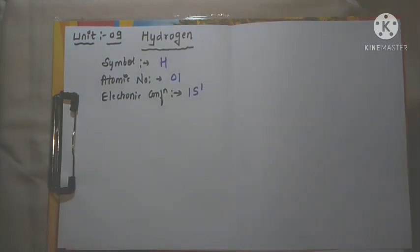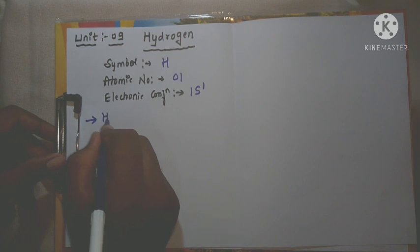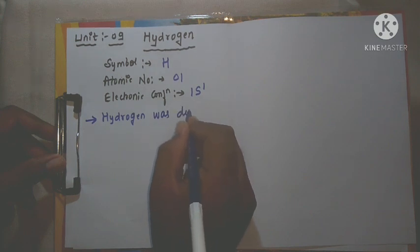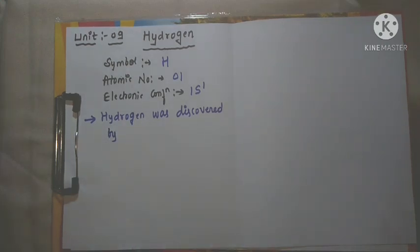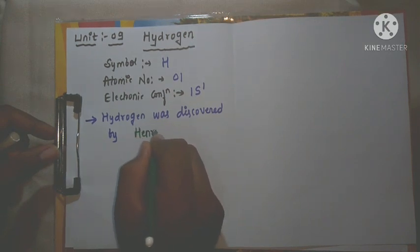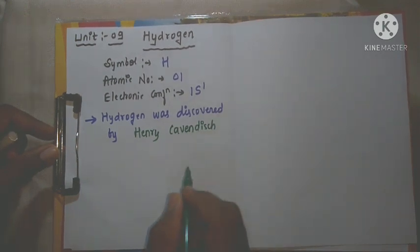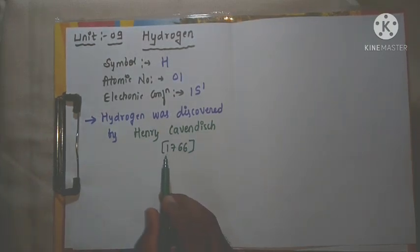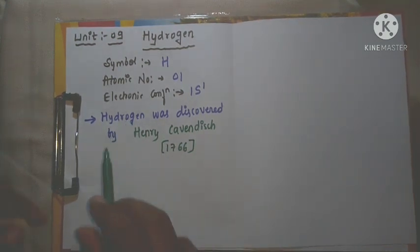Now the question is: who discovered hydrogen? Hydrogen was discovered by the scientist Henry Cavendish. He discovered hydrogen in the year 1766. So Henry Cavendish is the scientist who discovered hydrogen.